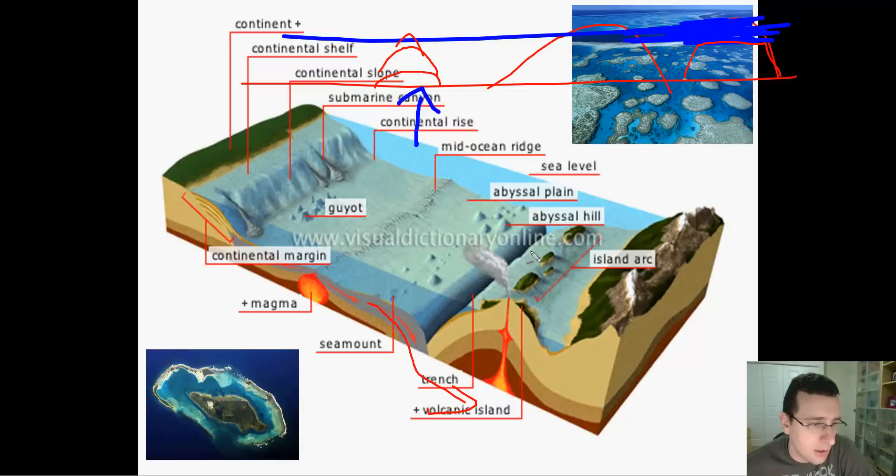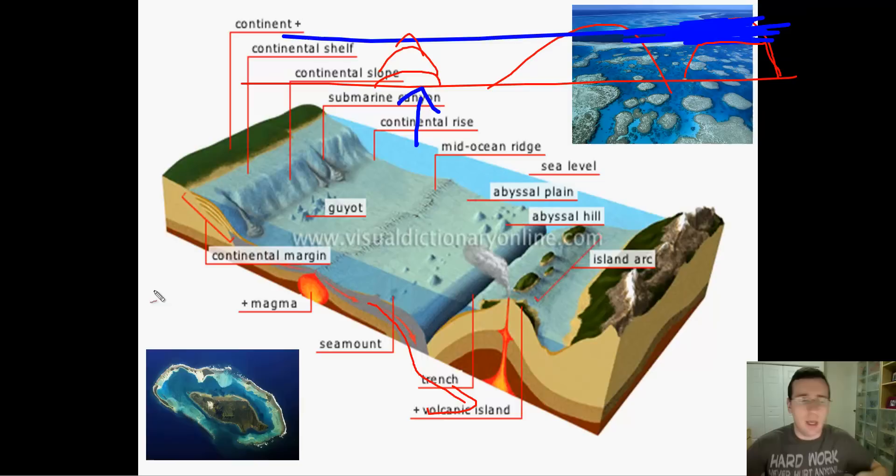The deepest parts of the oceans form at these trenches. An example is the Mariana Trench, which forms between the continental crust of Asia and the oceanic crust of the Pacific Ocean, and is the deepest part of the ocean at over 12 kilometers deep — very, very deep. Mount Everest would fit in there and then some.